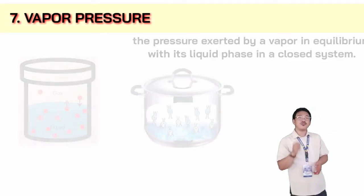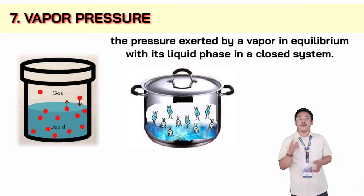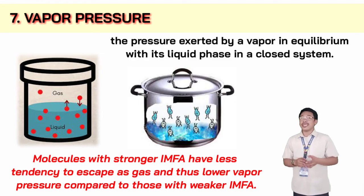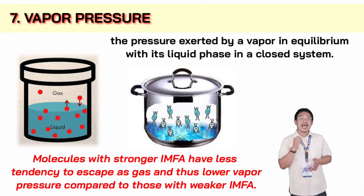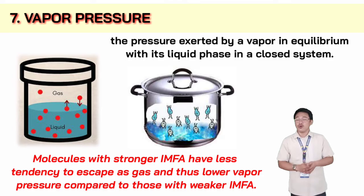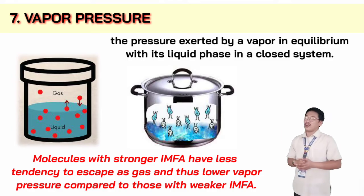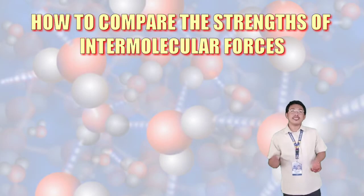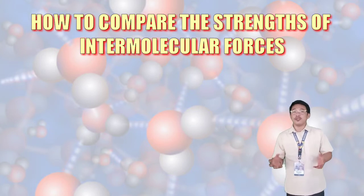And we have vapor pressure. Vapor pressure is the pressure exerted by a vapor in equilibrium with its liquid phase in a closed system. Molecules with stronger intermolecular forces have less tendency to escape as gas and thus lower vapor pressure compared to those with weaker intermolecular forces of attraction.